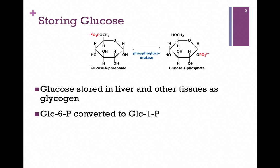We start with glucose 6-phosphate, and that gets converted to glucose 1-phosphate. We move the phosphate from the number 6 to the number 1 position through the action of the enzyme phosphoglucomutase — a readily reversible reaction.